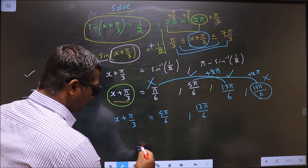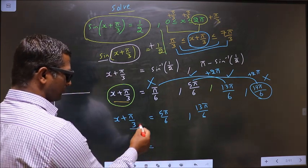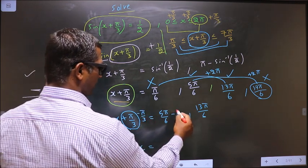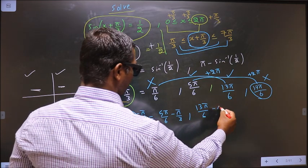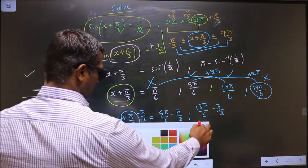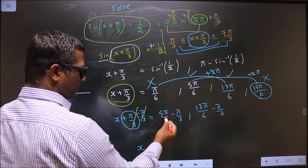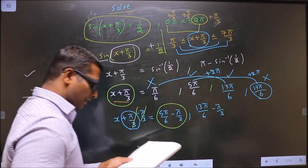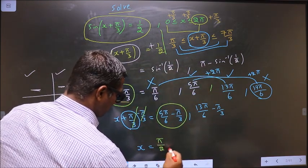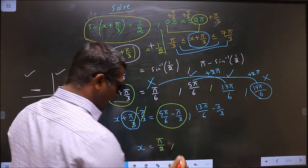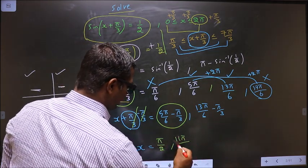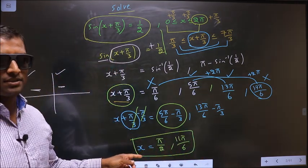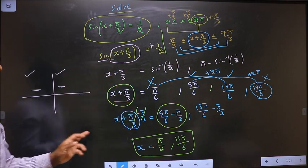Now to get the values for x, remove the + π/3 by subtracting π/3 everywhere. So x = 5π/6 − π/3 = π/2, and x = 13π/6 − π/3 = 11π/6. These are our answers.